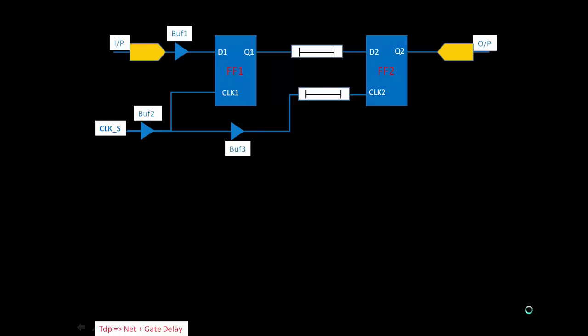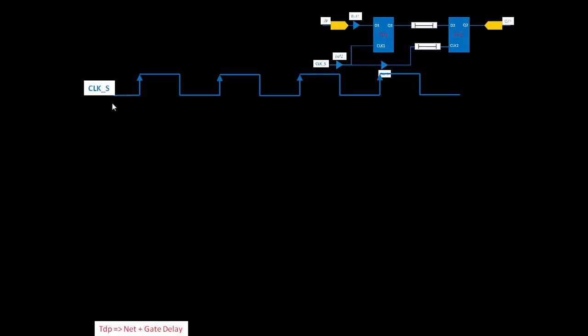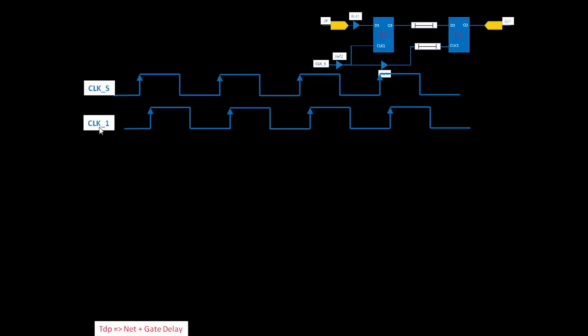We will discuss how clock skew affects setup violation. We will use almost the same diagram and waveform with little changes, so this session will be a little bit fast. This is the source clock S, and Clock 1 is delayed because of a buffer. The setup and hold time are properties of the flip-flop, not of the clock.